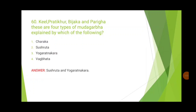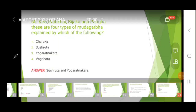The 60th question: kila, pradikur, vijaga, and parika are four types of mudagarba explained by which acharya? These are mentioned by Sushruta in the mudagarba chikitsa chapter in Chikitsa Sthana, and also in Yoga Ratnakara, so both options are correct. We have now covered questions 41 to 60. Please also watch the video for the first 40 questions. Drop a comment for any doubts, and stay tuned to Drona Institute of Ayurvedic Studies.